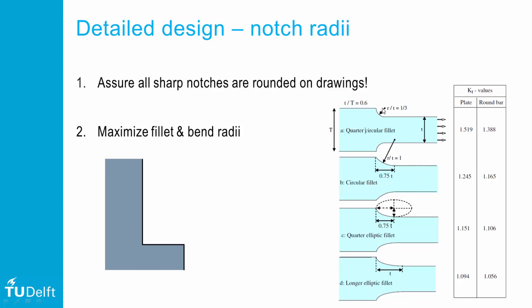One may try first to increase the radius, but one should realize that the fillet doesn't need to have the full quarter of a circle. One may take only a piece of it, leaving the sharp corner at the top.